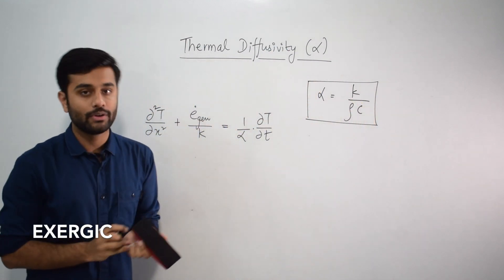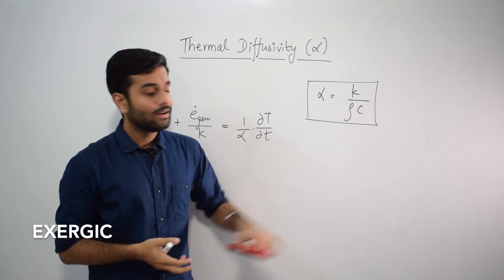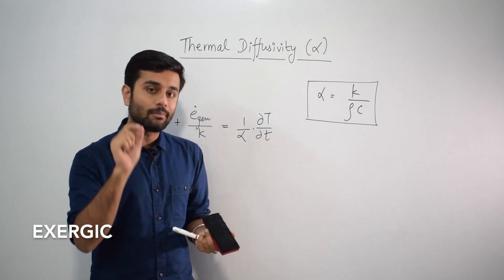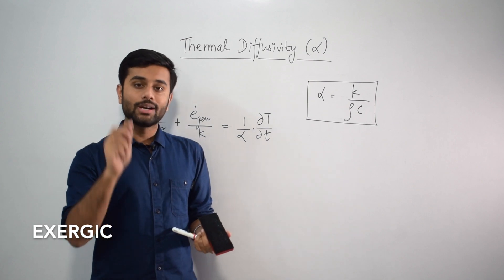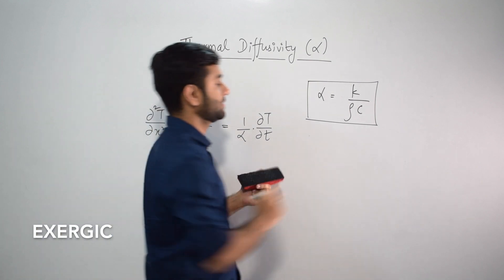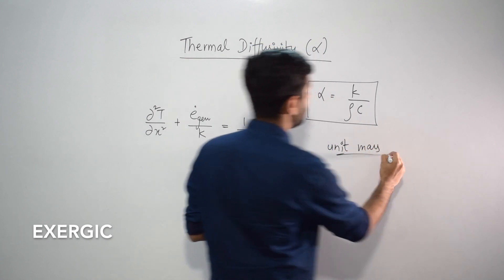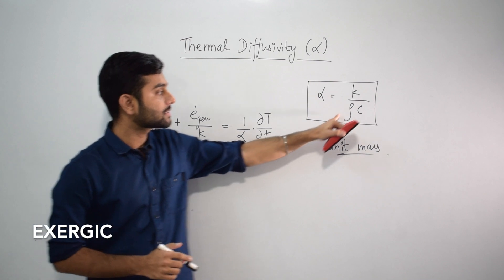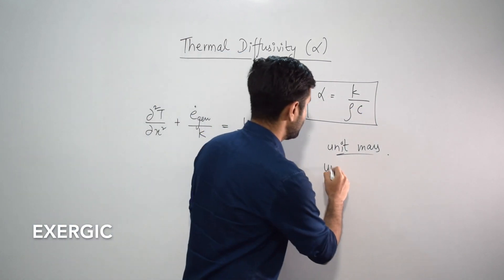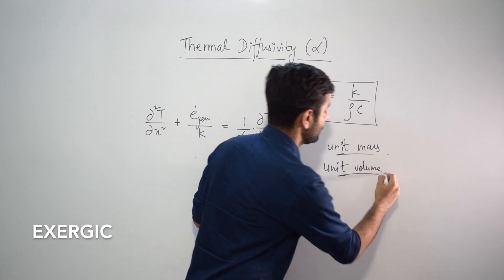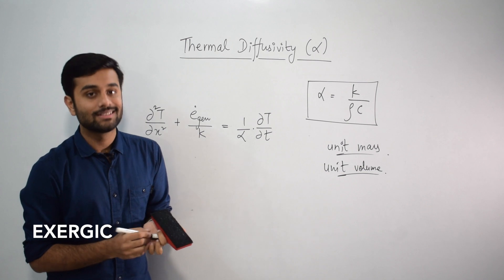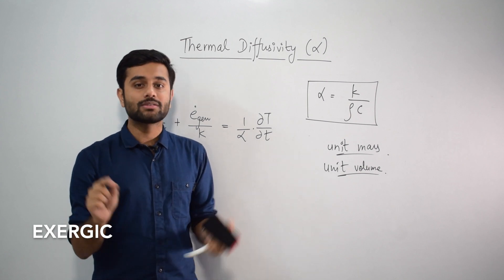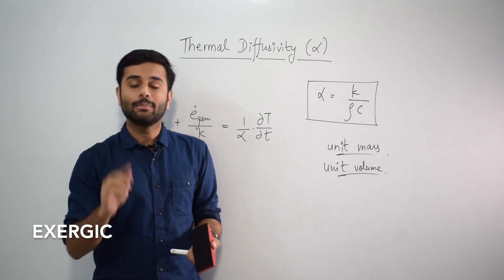What is K? K is thermal conductivity. Rho (ρ) is the density of the material, and small c is the specific heat of the material. Specific heat tells the amount of heat required to increase the temperature of unit mass by 1 degree Celsius. When multiplied with density, this combined term ρC is defined for unit volume — it tells the amount of heat required to increase the temperature of any unit volume in the material by 1 degree Celsius.